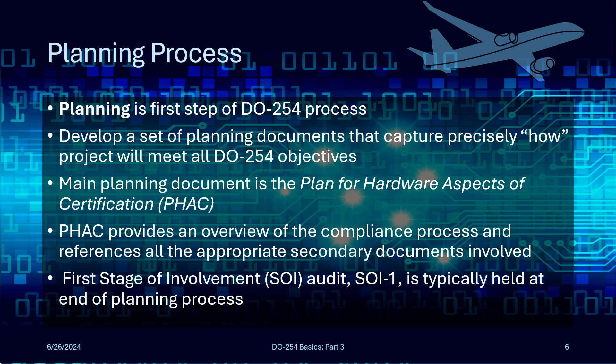The main planning document is called the Plan for Hardware Aspects of Certification, or PHAC for short. The PHAC provides an overview of the entire compliance process and references all the appropriate secondary documents involved in the project. Don't think you can skip this step, because the certification authorities will audit you to review your plans before you get started. These audits are called Stage of Involvement Audits, or SOI audits. The first one, SOI-1, is typically held at the end of the planning process to review all of your plans.